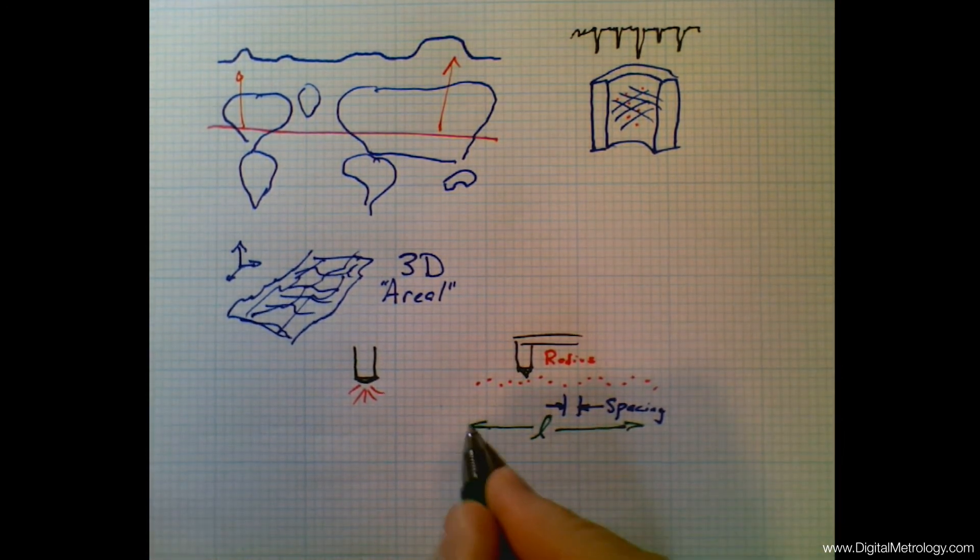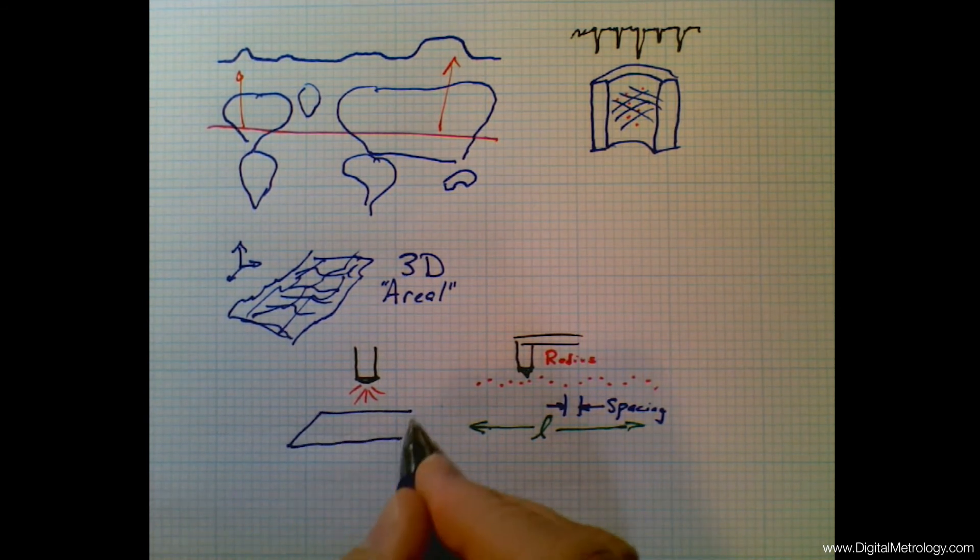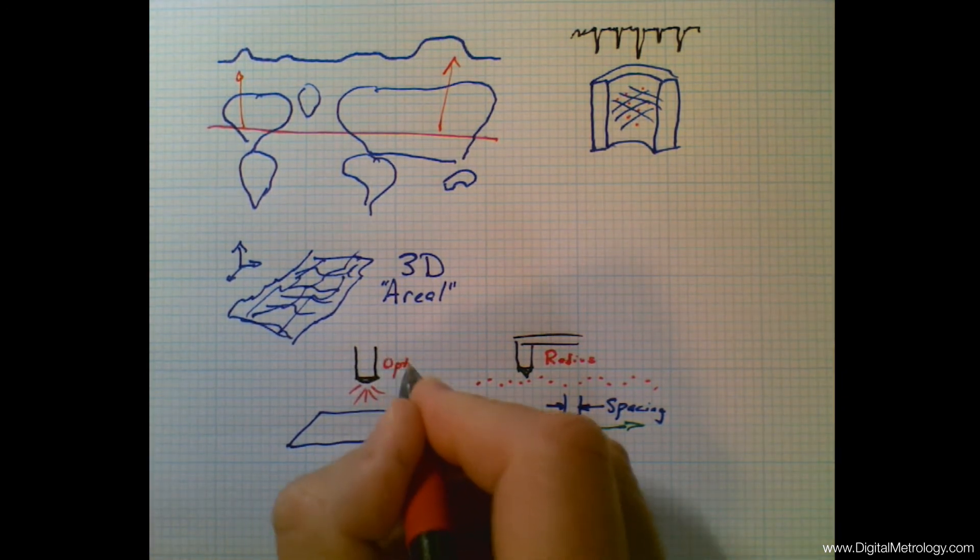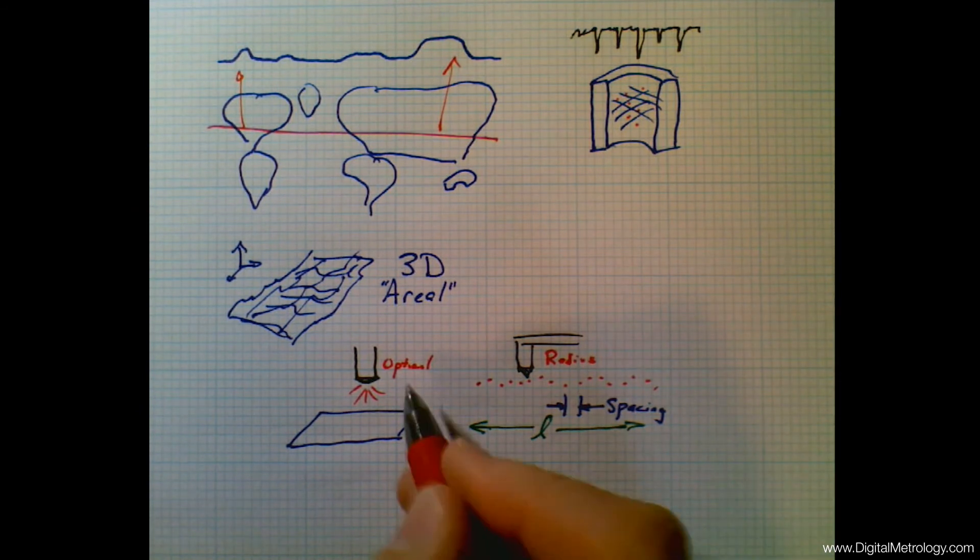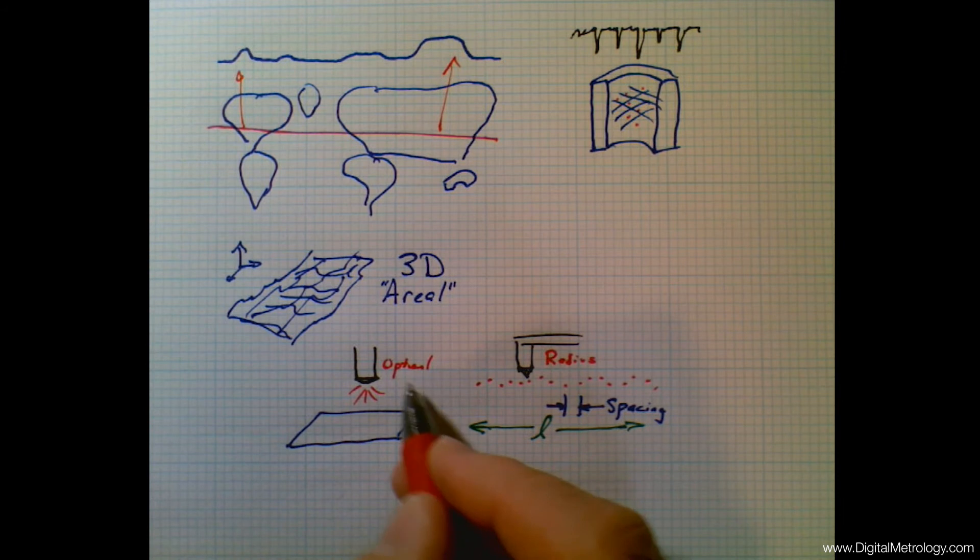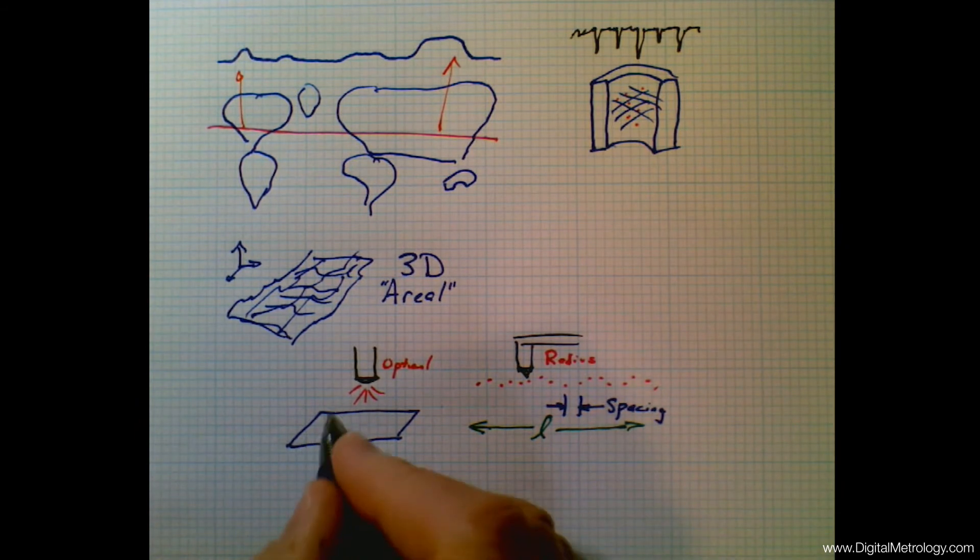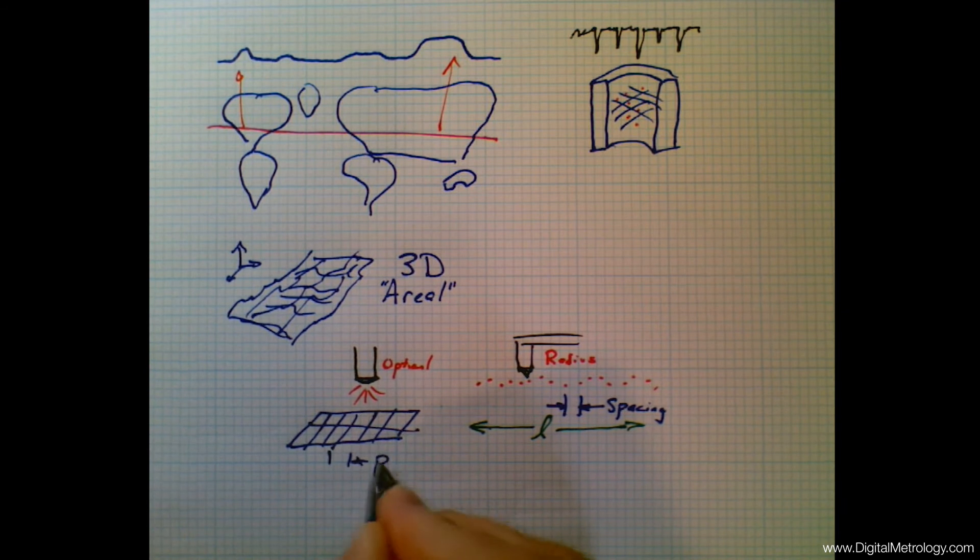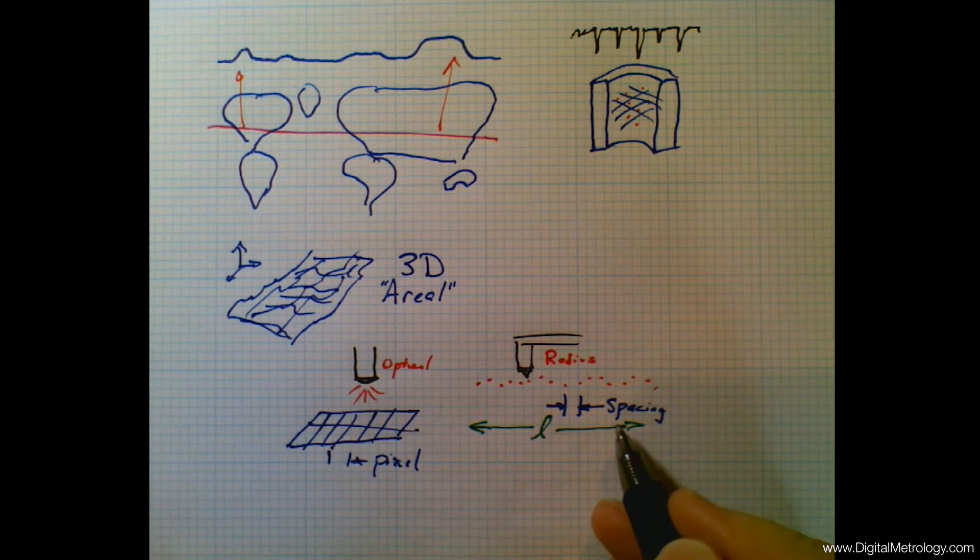These three properties are also present in our 3D or aerial measurement. We're collecting data and collecting an image of the surface based on similar properties. Instead of the radius, we have optical properties in the system. We have things like diffraction limits or the sensing mechanism in terms of the area that's being sensed at each point. So these optical properties can relate to the stylus. Instead of spacing, we now have pixels. So we might have a pixel size. And the pixels in the optical world are analogous to the data point spacing in the stylus world.